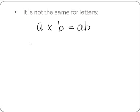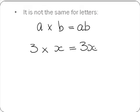Similarly, if we want to multiply a number by a letter — so 3 by x — we drop the multiplication sign and we write the numbers and the letters together, so we get 3x. Be careful when you are writing your x's; try and do them so that they don't look like the multiplication sign.